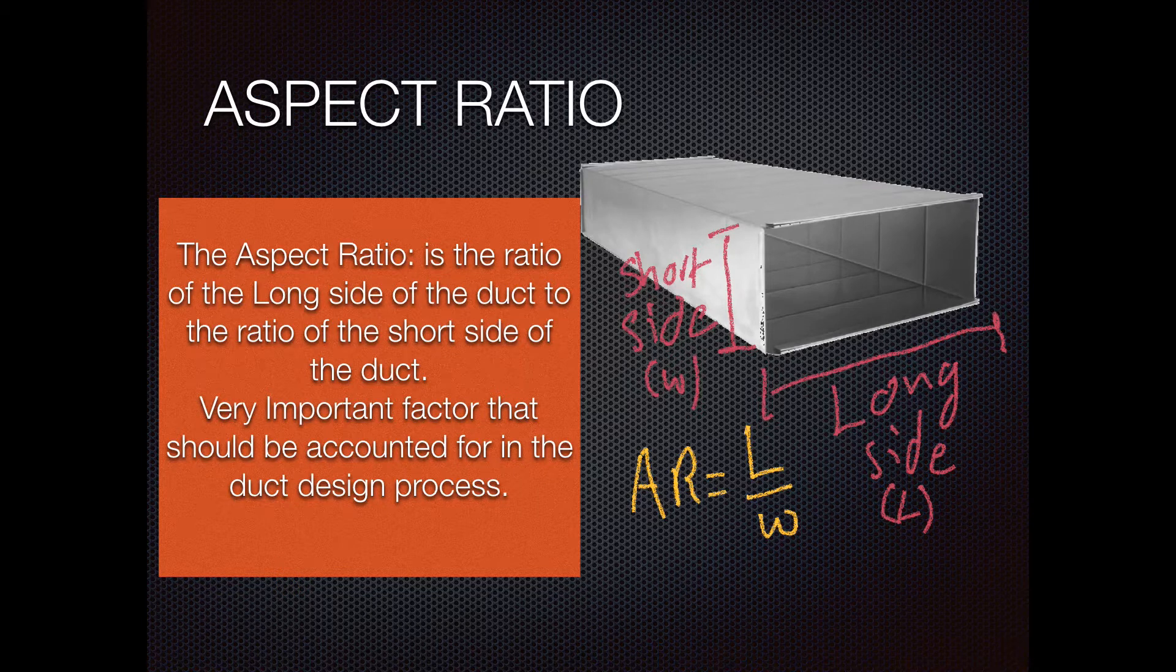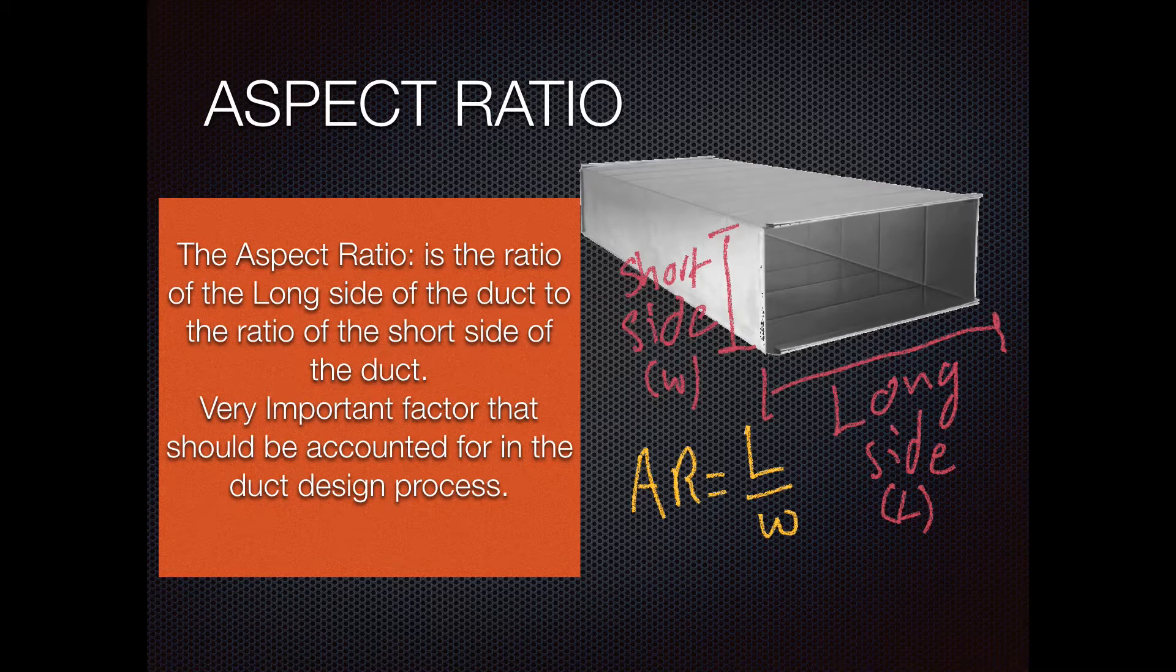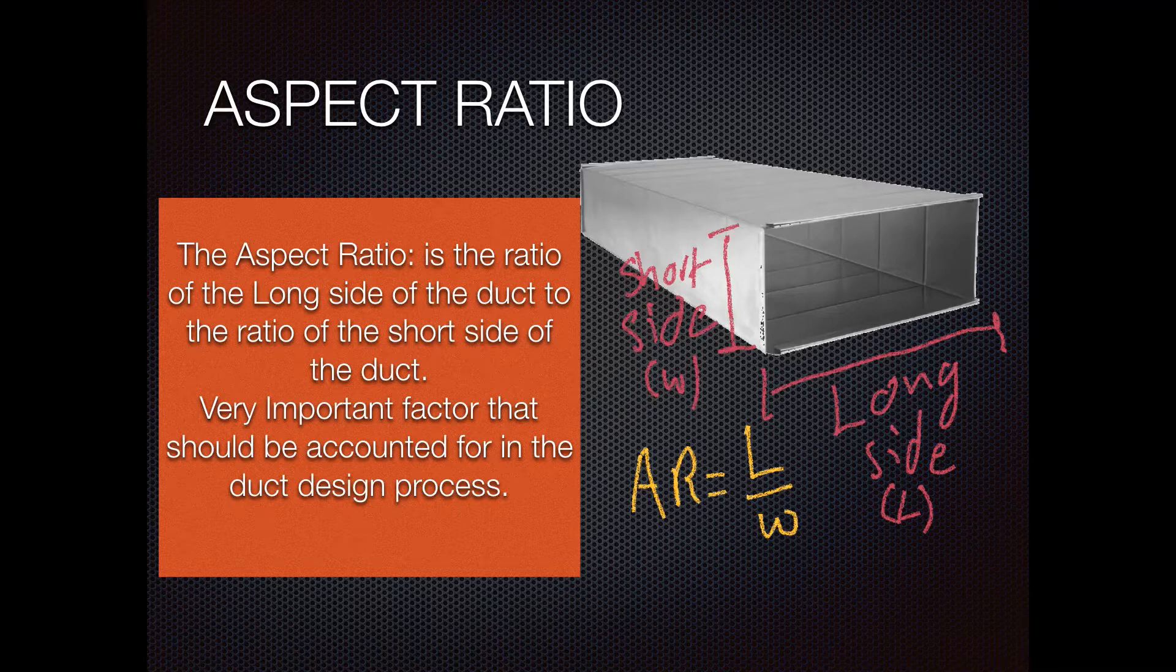The aspect ratio is a term related to rectangular ducts, where it is the ratio of the long side of the duct to the short side of the duct, which means you're going to take the long side as you can see in the picture and divide it by the short side. Therefore, it's called the aspect ratio, denoted by the letters AR, which stands in the industry as aspect ratio.